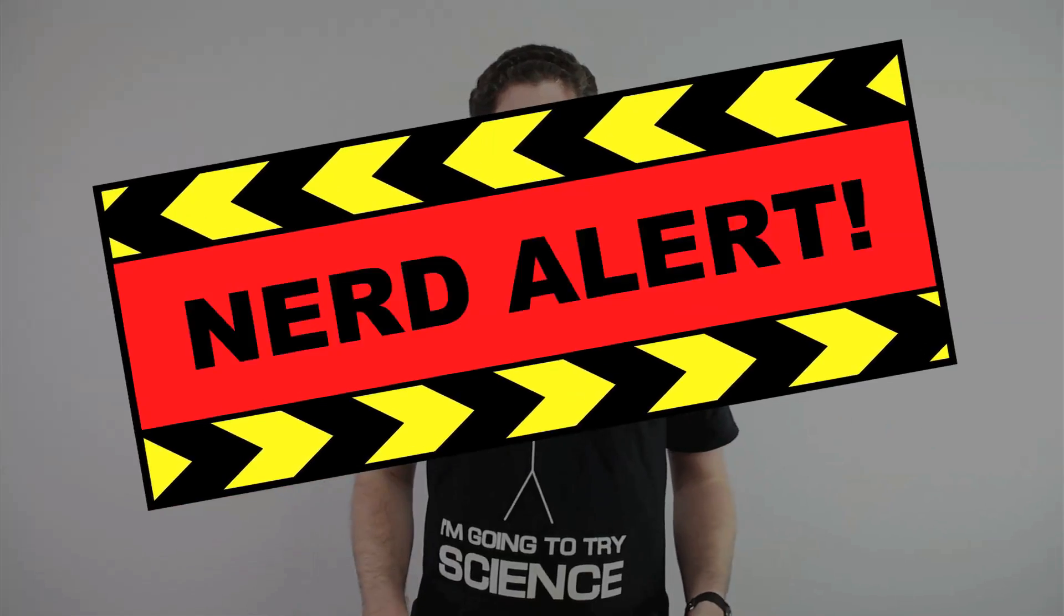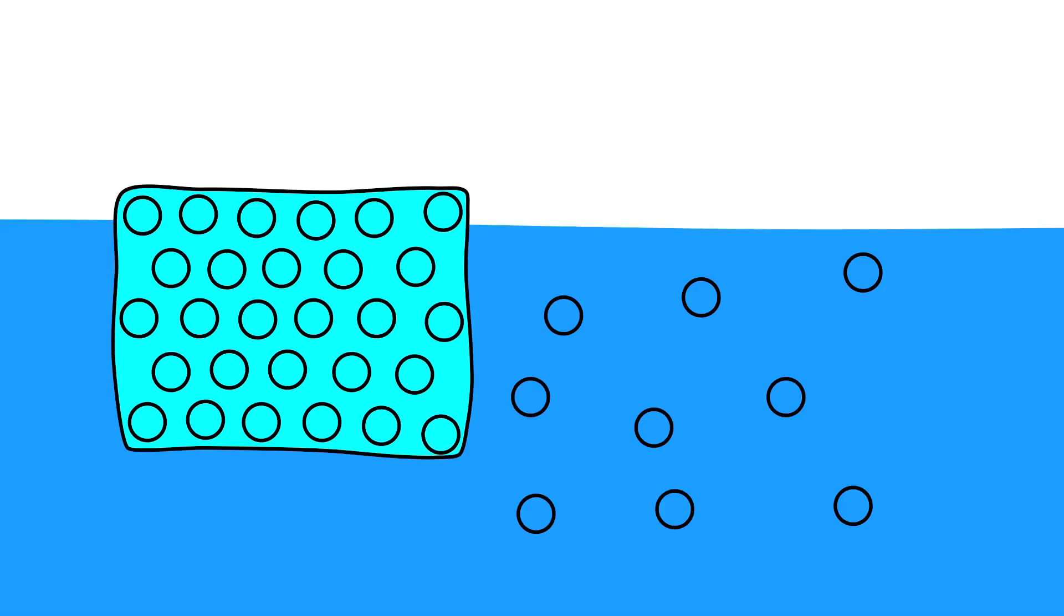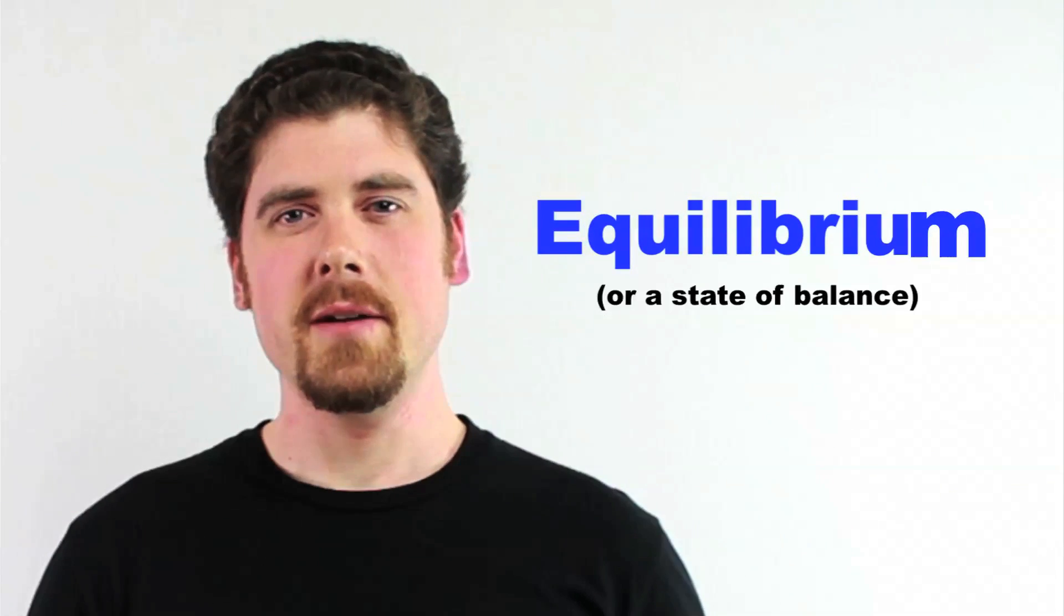So what's going on that makes this happen? When the ice cube is in the water, it's beginning to melt. There's water molecules leaving the ice, or melting, as well as molecules from the liquid getting frozen back onto the ice. So the ice cube and the liquid in the glass are in a state of equilibrium.